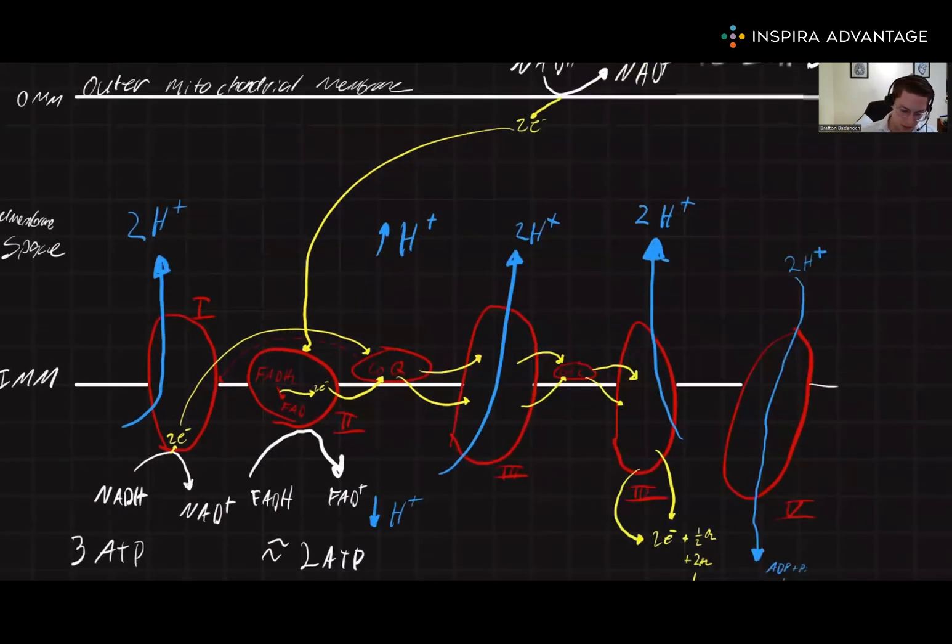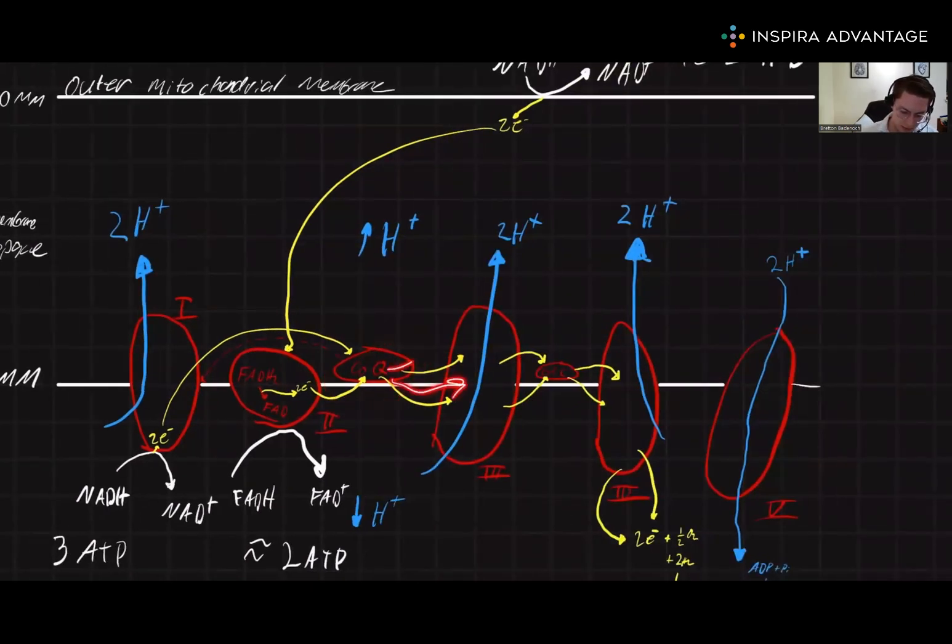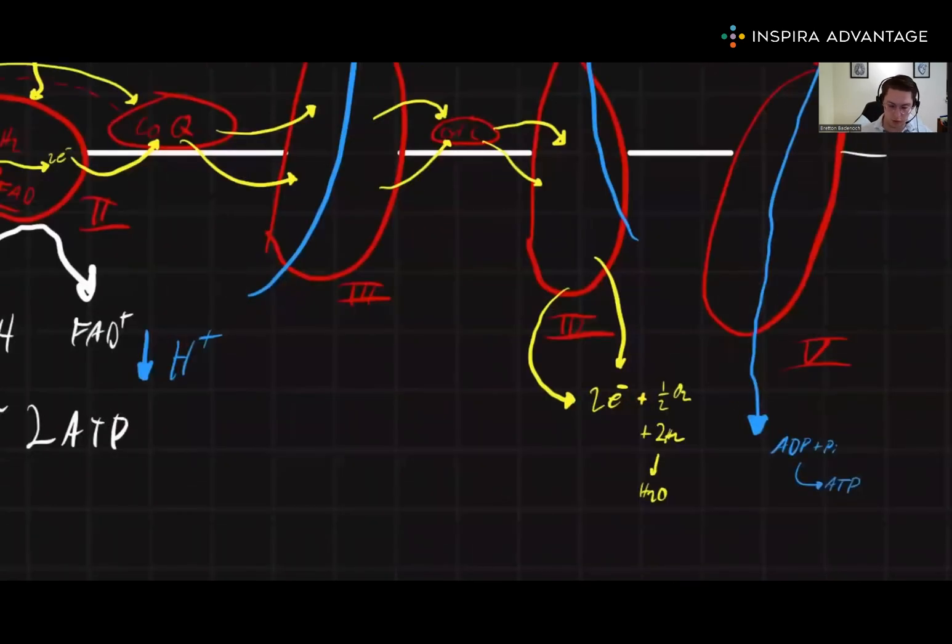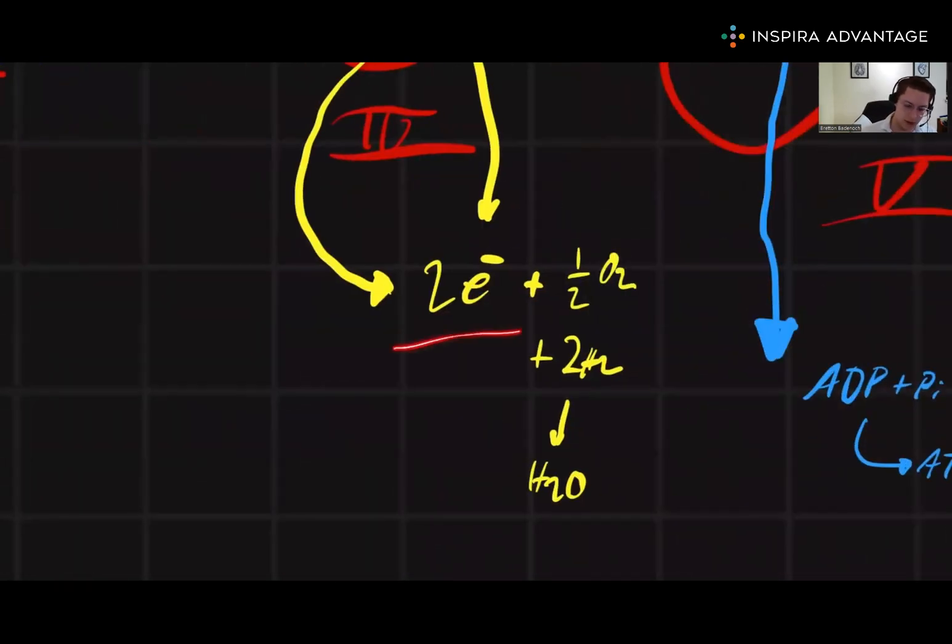CoQ is then going to shuttle these electrons to complex 3. Complex 3 is going to be pumping out 2 hydrogens, and from complex 3, this little enzyme called cytochrome C is then going to grab the electrons from complex 3 and bring them over to complex 4. Complex 4 is then going to take these electrons and bind them to oxygen in a half reaction. If we take 2 electrons and bind them to half a mole of oxygen, we get 2 water molecules. The final acceptor of the electron transport chain is oxygen. The MCAT loves asking you this question.